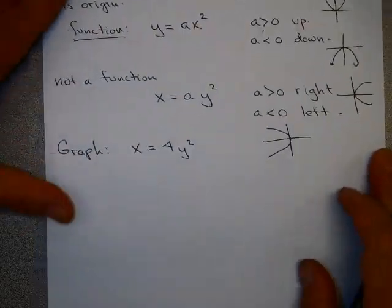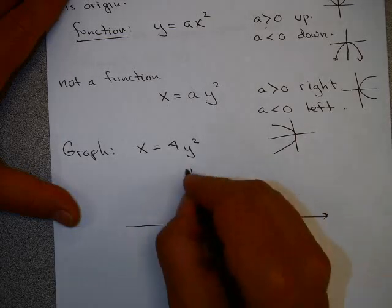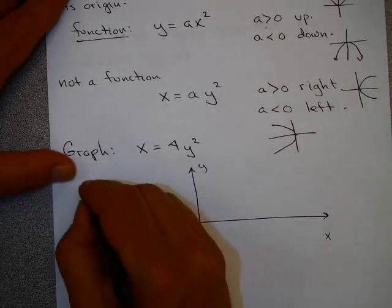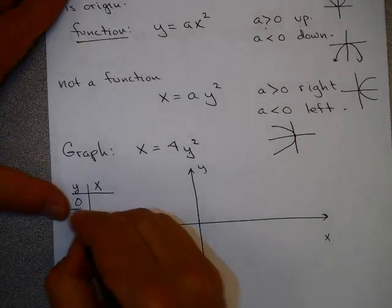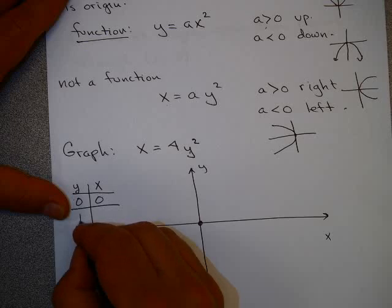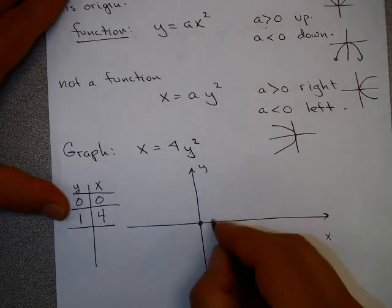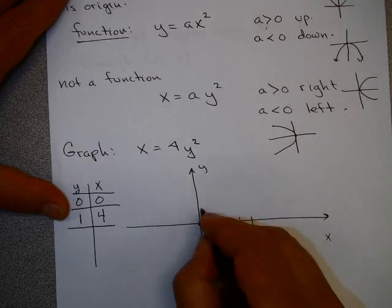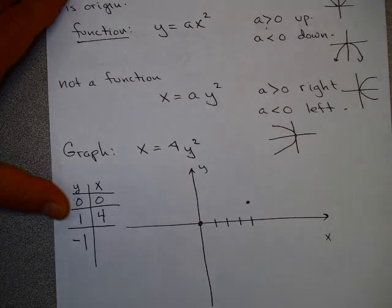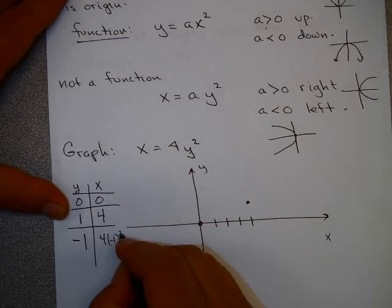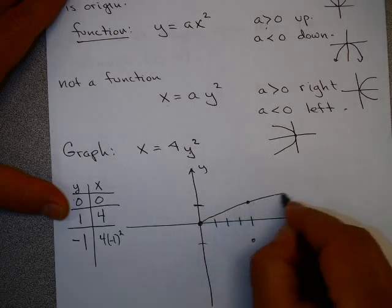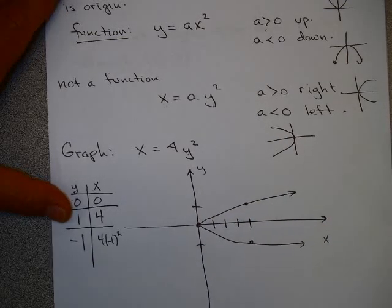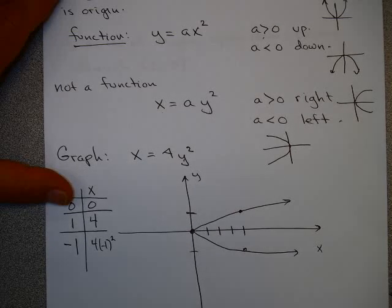Let's graph x equals 4y squared by picking some points, choosing y first to get x. If y equals 0, x equals 0. If y equals 1, x equals 4. If y equals negative 1, x equals 4 times (−1) squared, so x equals 4 also. Plotting these points, you can see this parabola opens to the right.